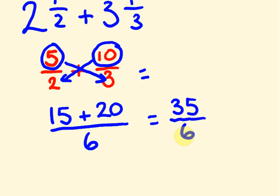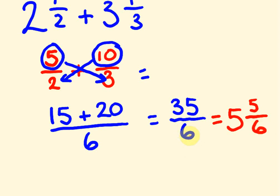We can actually turn this back into a mixed number — a lot of teachers like their students to do this. At the moment it's an improper fraction, a bigger number over a smaller number. So we go thirty-five divided by six. Thirty-five divided by six is five, and there's five left over. That five we put as the top number of our fraction over six. So the answer is five and five sixths.